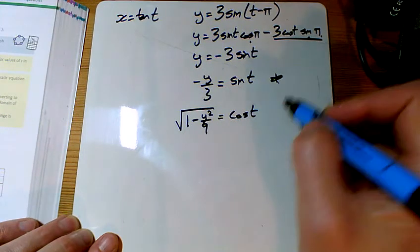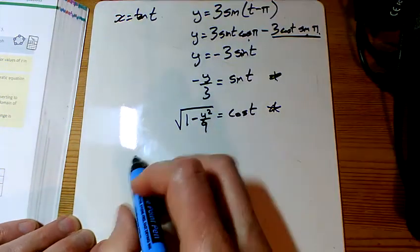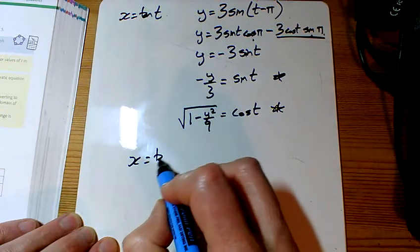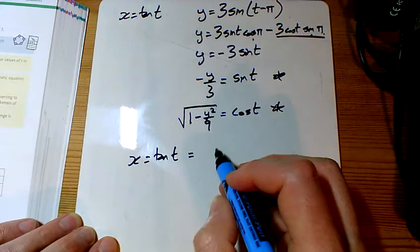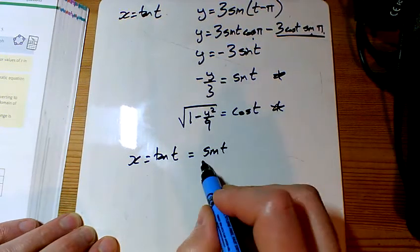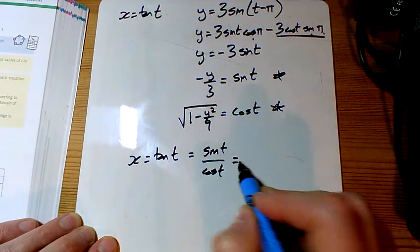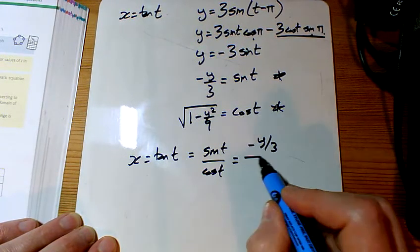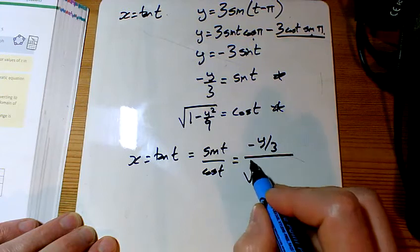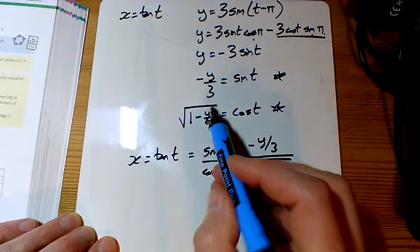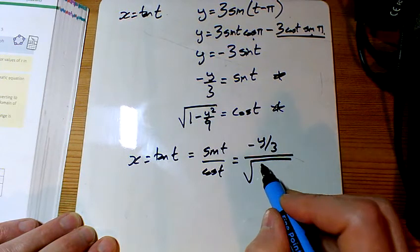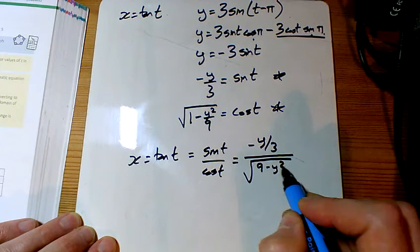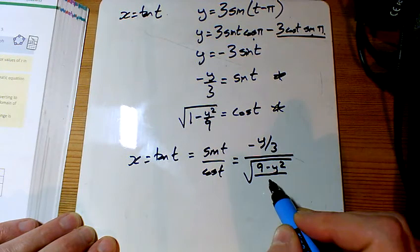Let's use these two things in that one. Because x is tan t. So x is sine t over cos t. So it's minus y over 3 divided by the square root of, let's put this as one fraction. So 9 minus y squared over 9.